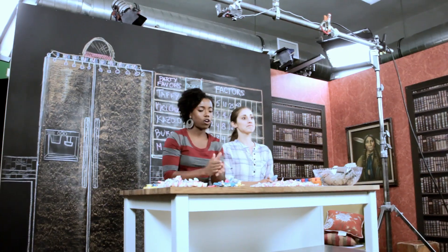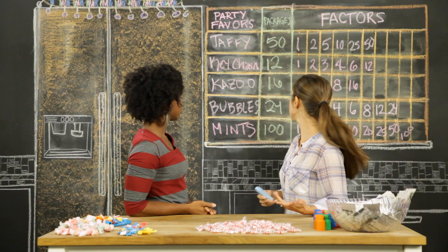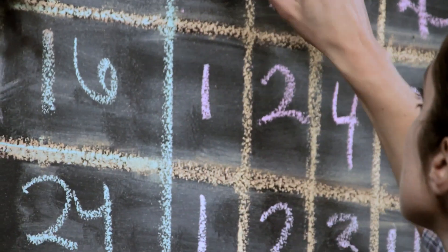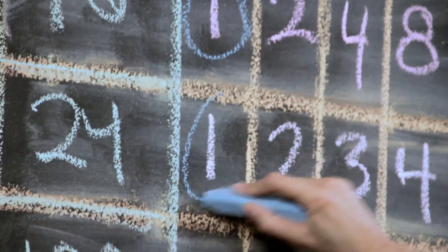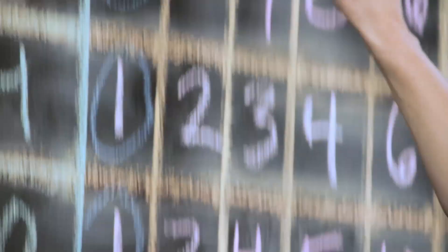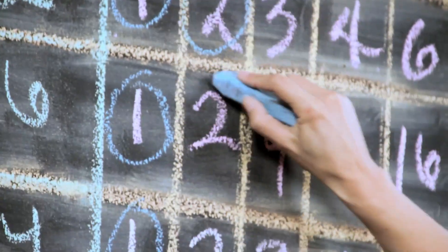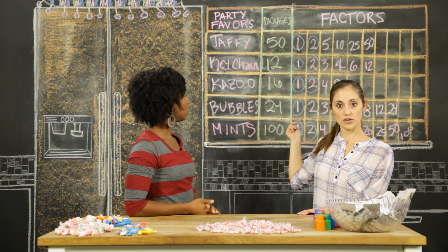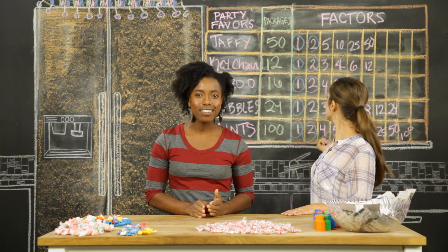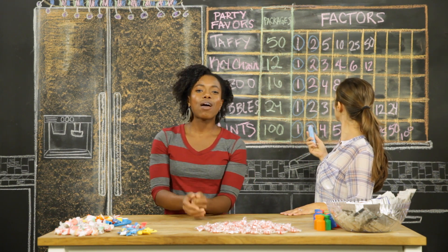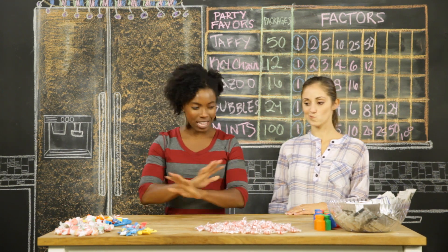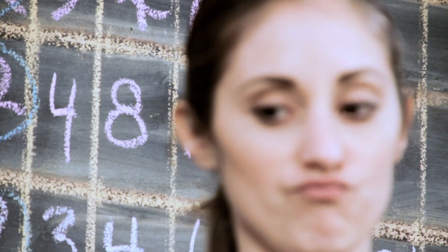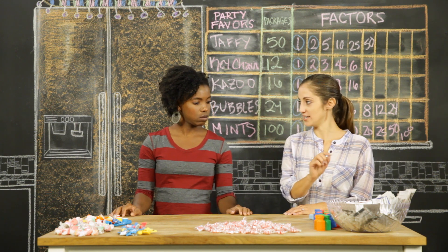All right, so we finished the mints. Let's see what the common factors are. One is always a common factor, and it seems like two is another common factor. And actually, two is the greatest common factor. So that means we can make two piñatas with equal filling. Bummer — I wanted to make more than two. Wait, hang on, I have an idea.